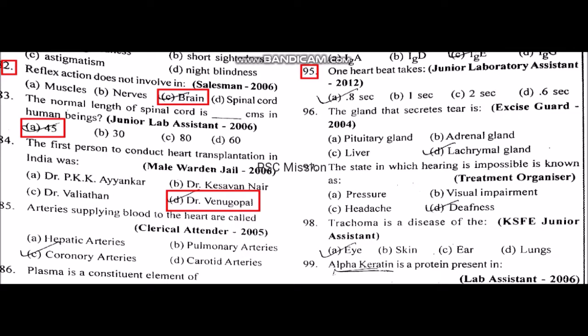Arteries supply blood to the heart. The arteries that supply blood to the heart are the coronary arteries. Question: what causes the heart to beat?